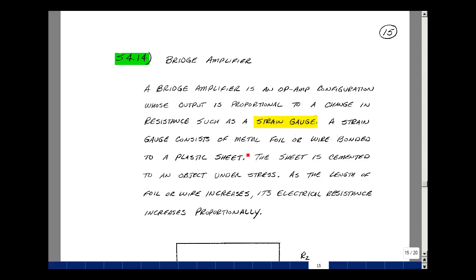A strain gauge is a metal foil or a wire bonded to a plastic sheet. The sheet is cemented to an object that's usually under stress. As the length of the foil or the wire increases, its resistance increases proportionally. But these are very small changes, so we need an amplifier to be able to detect the change.